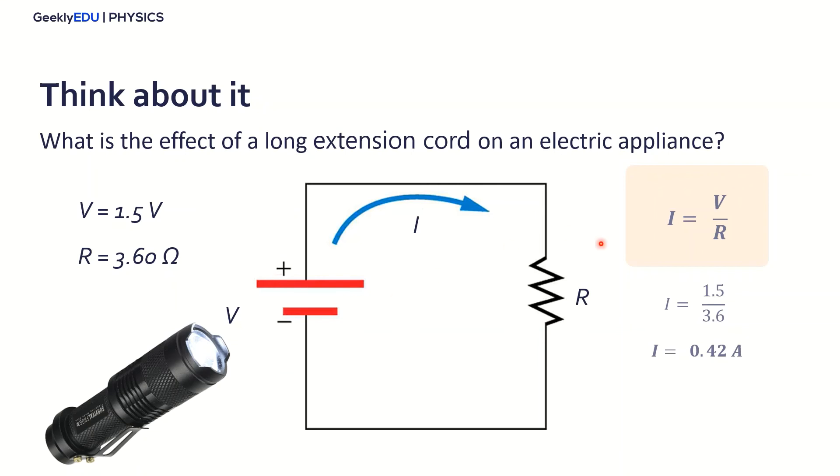Or even your cell phone when it's charging. And what happens to the current if you have a really long extension cord? Remember the formula to calculate the resistance in a wire? And if you change that resistance, what changes here with the current? And what may happen to your electric appliance when you change this current here? Think about it and write your answers in the comment sections.